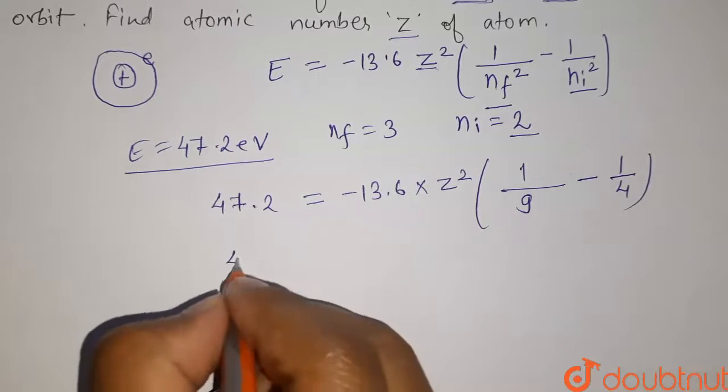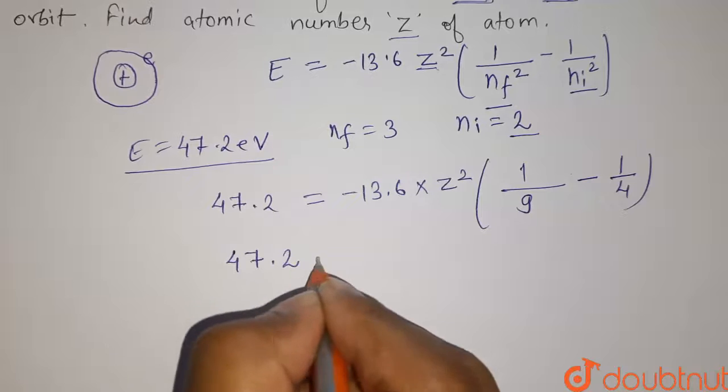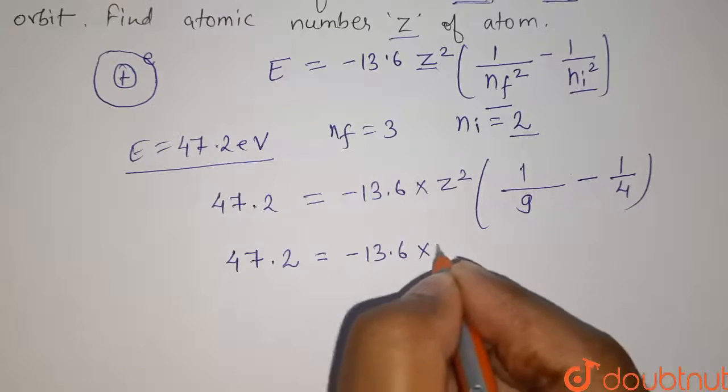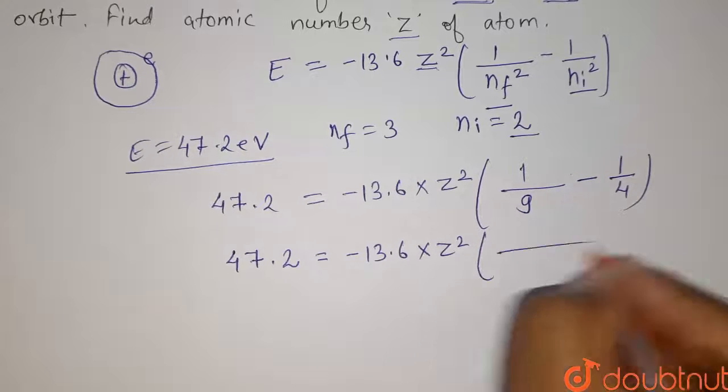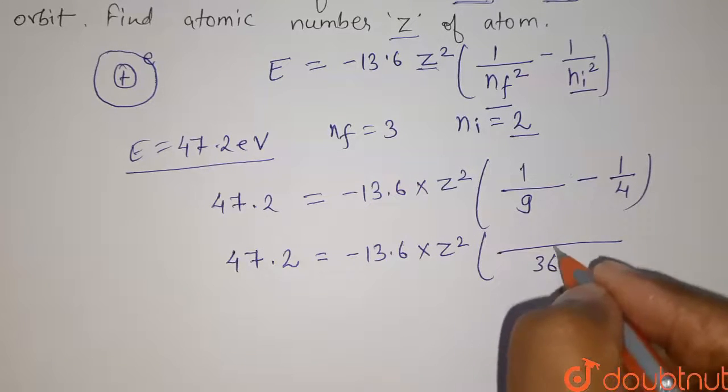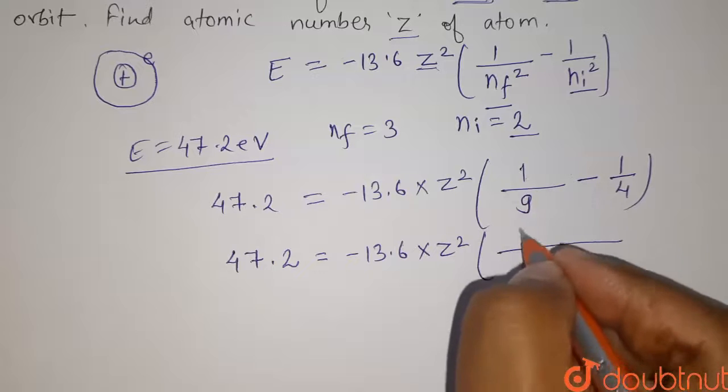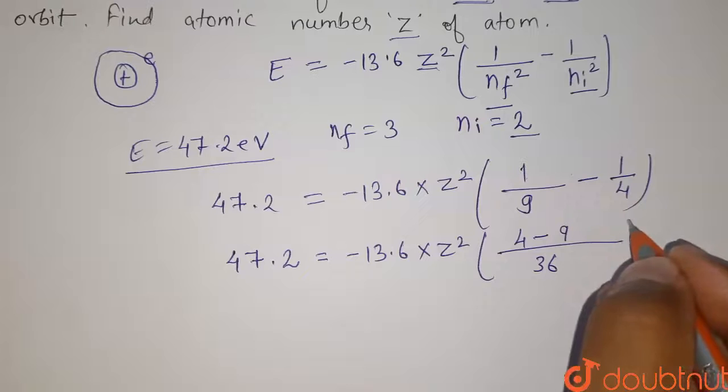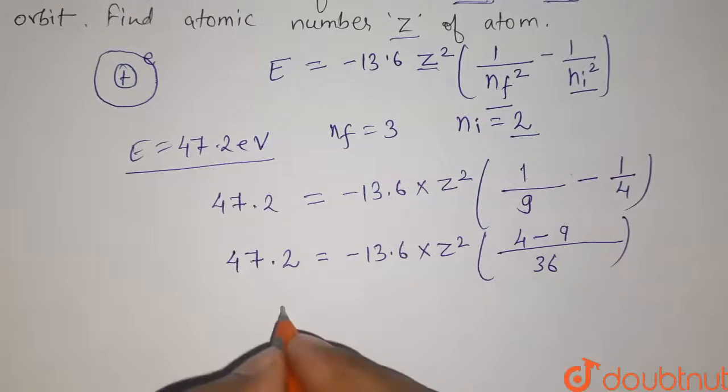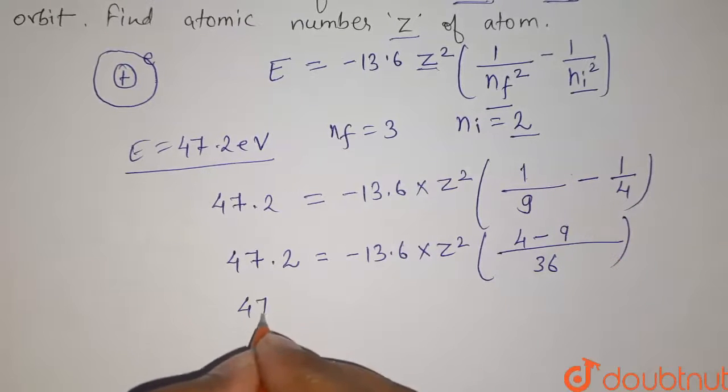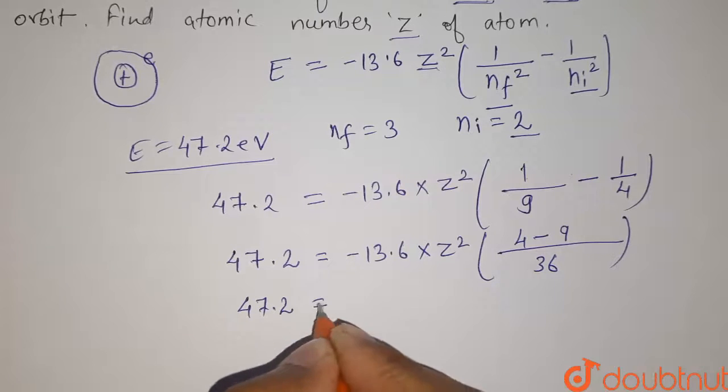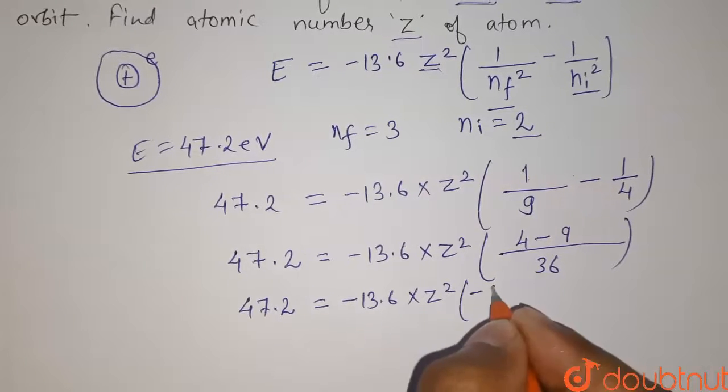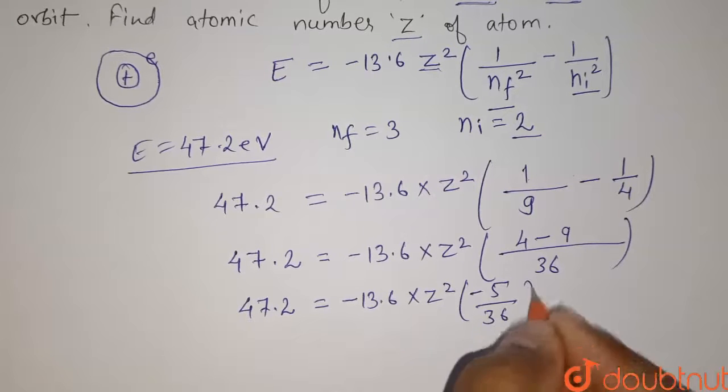Now further simplify it. So it will become 47.2 equals minus 13.6 into Z square. The LCM of 9 and 4 will be 36 and here it will become 4 minus 9. So it will be 47.2 equals minus 13.6 into Z square minus 5 by 36.